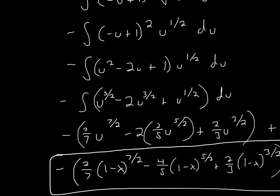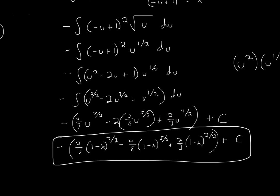Now we can finally integrate. For u to the 5/2, we add 1 to get 7 over 2, then bring it down and invert to get 2 over 7. For the negative 2u to the 3/2 term, adding 1 gives 5 over 2, which inverts to 2 over 5, and the 2 moves outside giving negative 4 over 5. For u to the 1/2, adding 1 gives 3 over 2, which inverts to 2 over 3. Don't forget the plus C — that's an easy way to lose points.